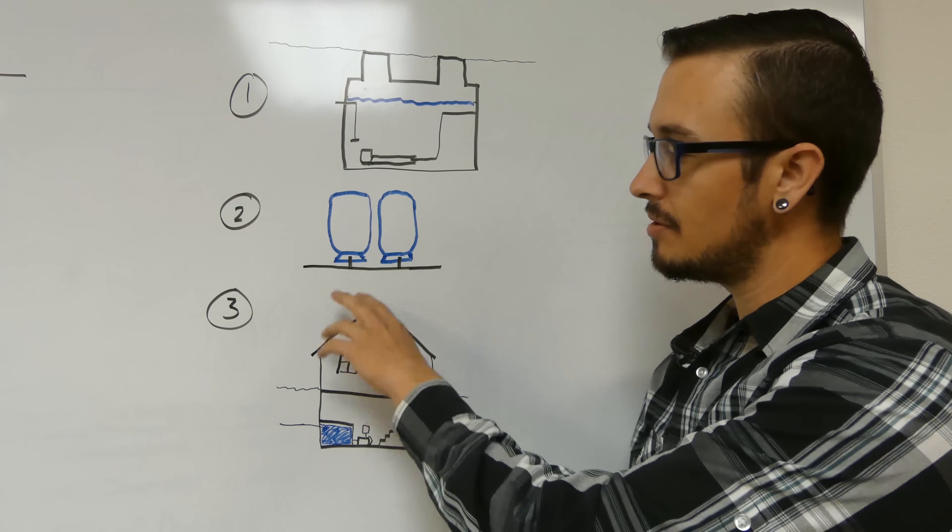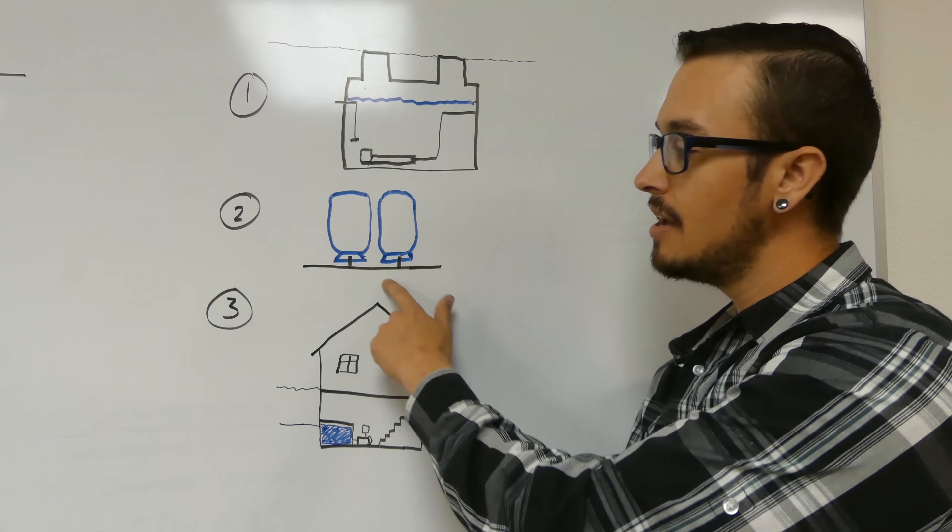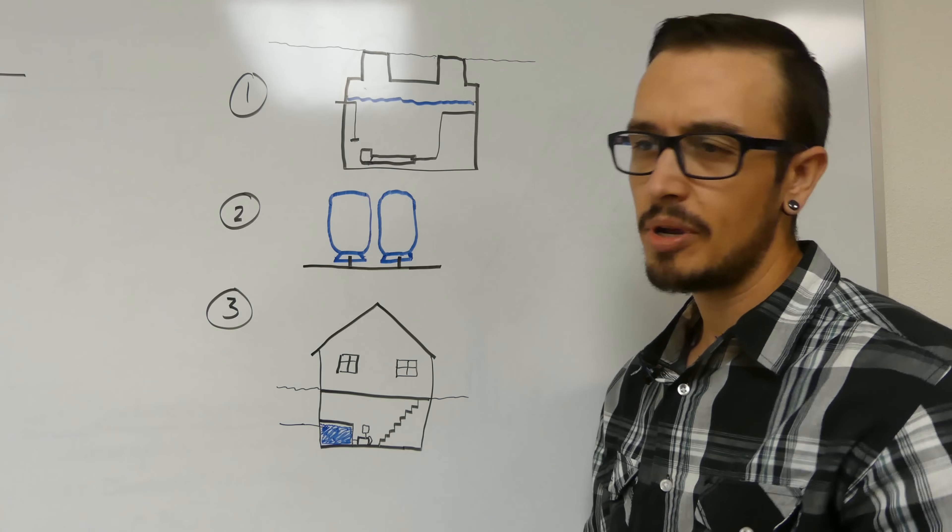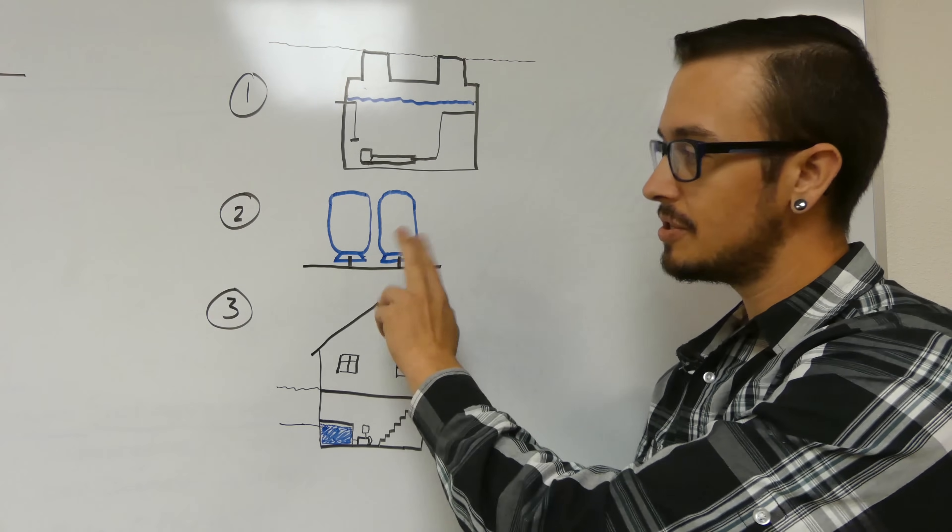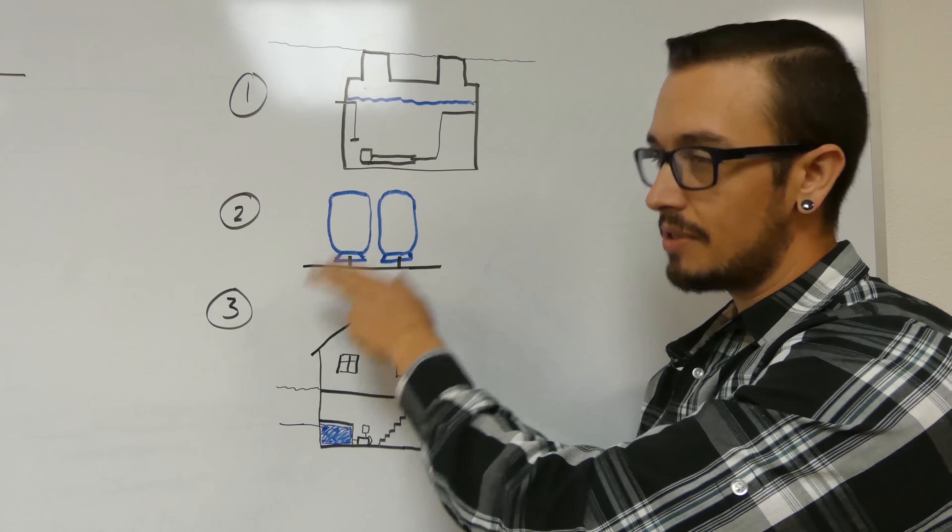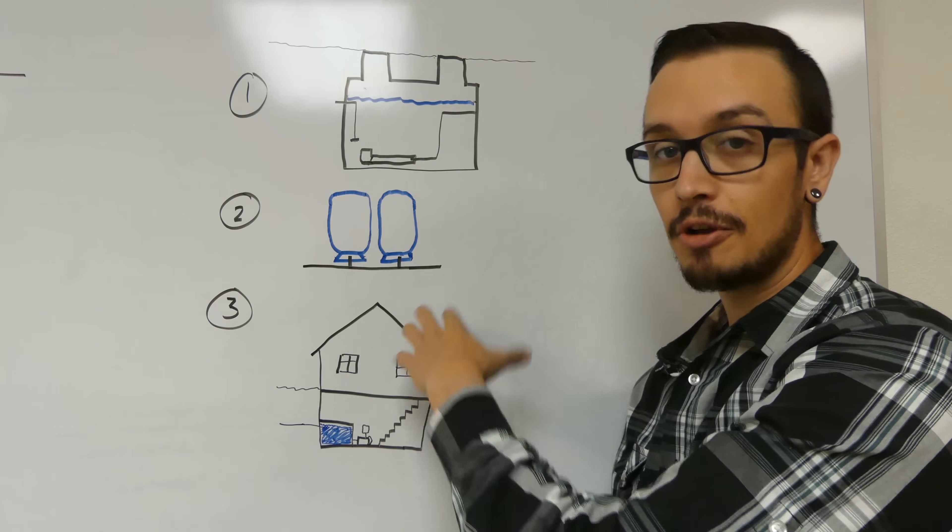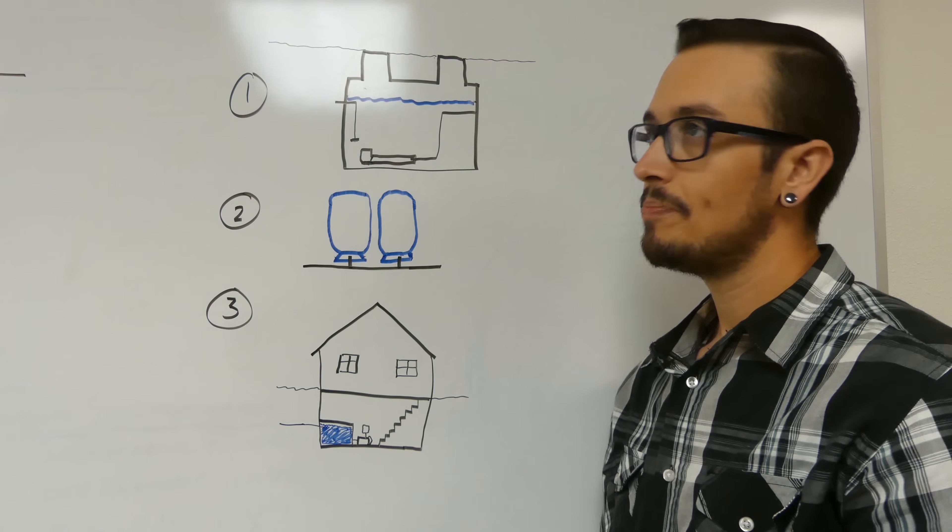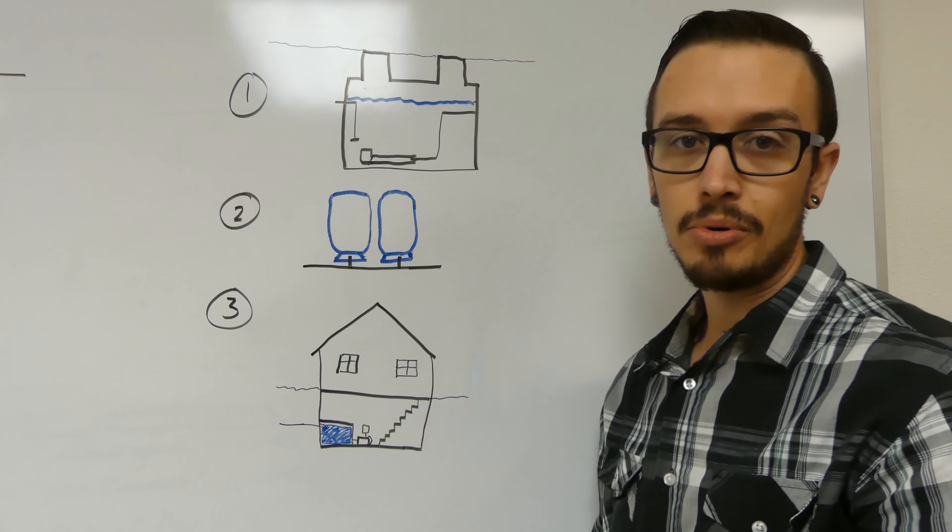But pressure tanks are nice. On your standard most common pressure tank is an 81 gallon tank. So that would have about 20, 25, depending on what pressure you're operating at, gallons of drawdown. So you could add that much capacity to your system with every pressure tank that you add.